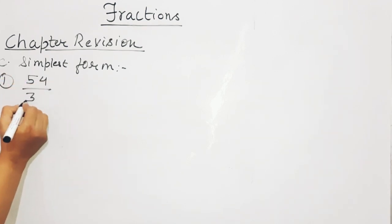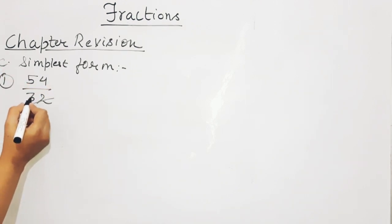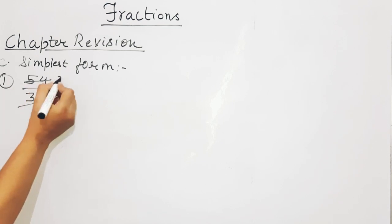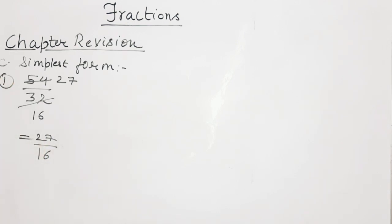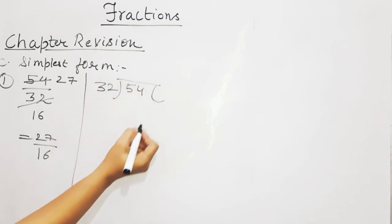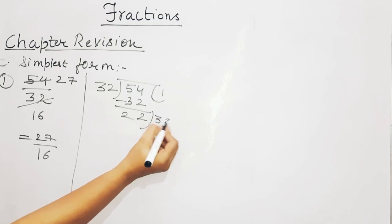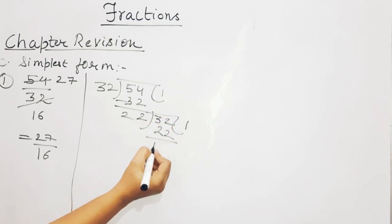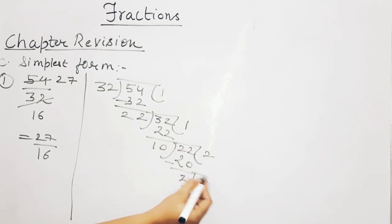The first option is 54 upon 32. You have to simplify it — you cannot directly reduce it. So you have to take the HCF of 54 and 32, that is the HCF of the numerator and denominator, and then divide both by it.